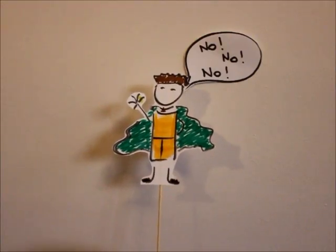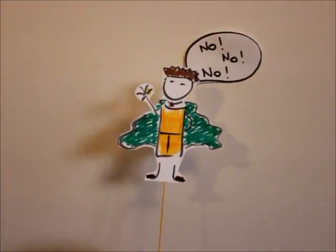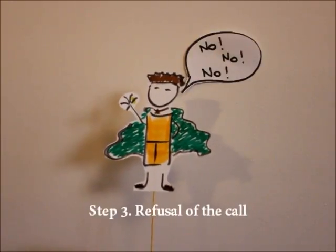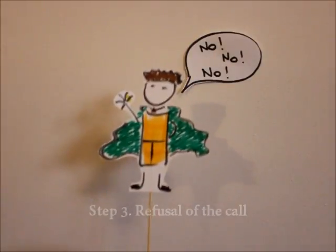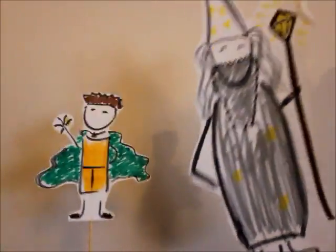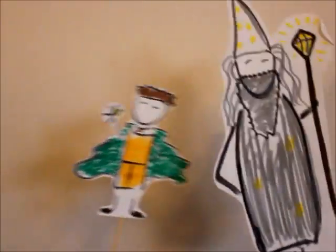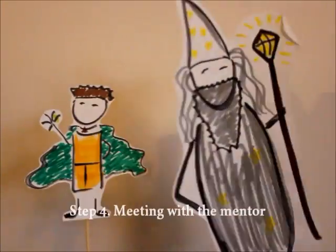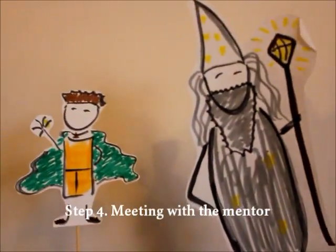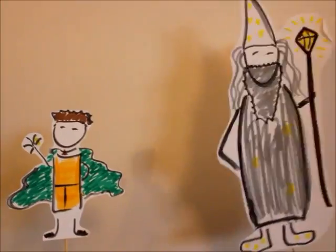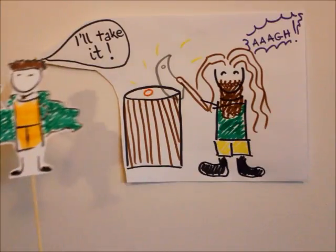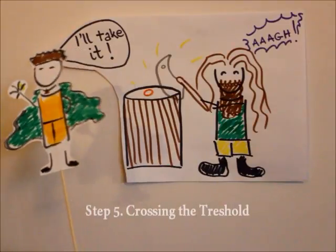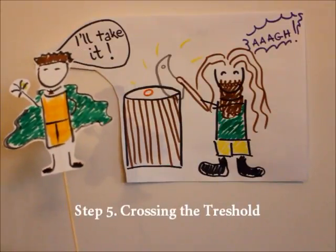Of course your character cannot be too eager to leave its ordinary world, so Step 3 is refusal of the call. On his way, he needs to find a bearded mentor who will help him in his journey. In Lord of the Rings, Step 4 — meeting with the mentor — was a bit earlier, but we all know that Gandalf is always there for Mr. Frodo. Finally, your character will go into the unknown as he crosses the threshold in Step 5.